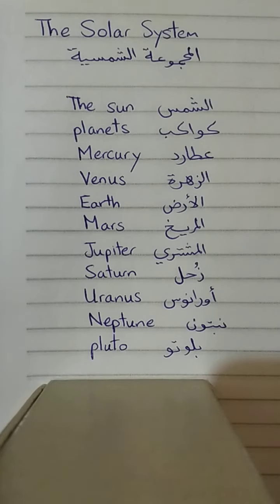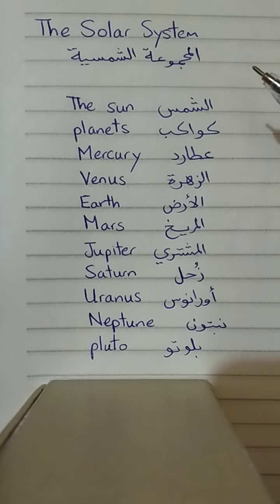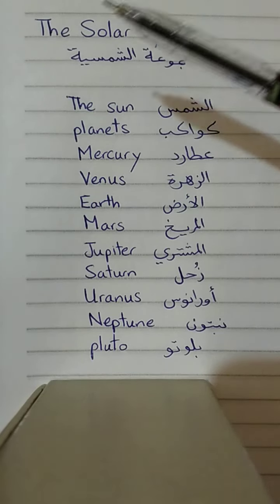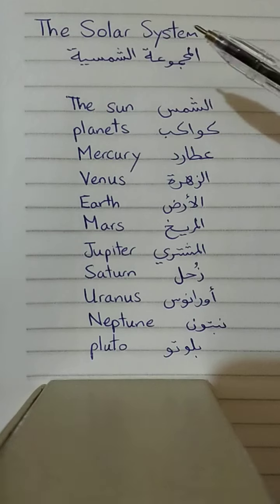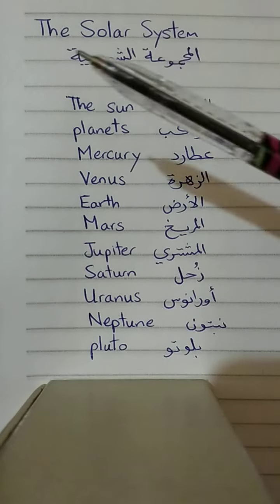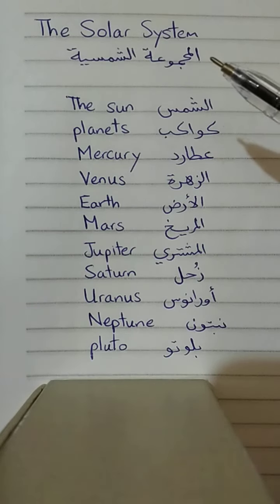Hi, girls. Hi, fans. Hi, everyone. We are going to turn on the subject of the sun's light in English. The solar system. The solar system means the sun's light.